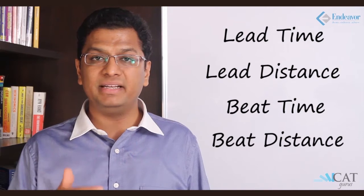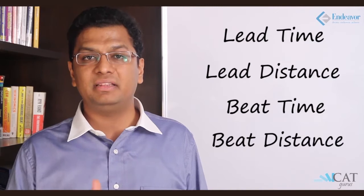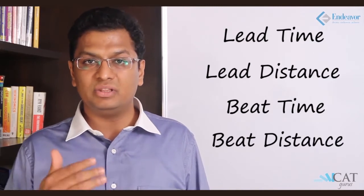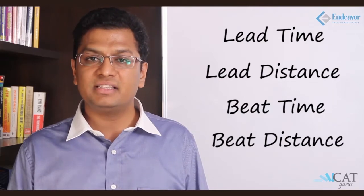There's something called beating distance. Now if I complete the race and B is 20 meters behind me, that is called beating distance. Now these are the four major things used normally in races. Let us see how we apply it.